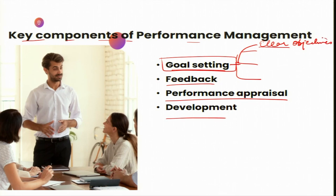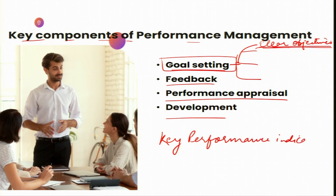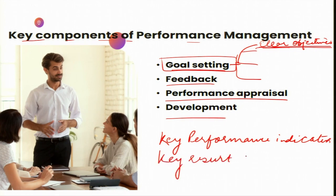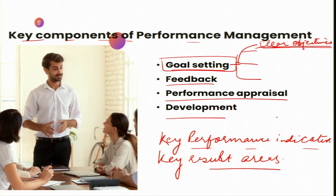One of the important components of goal setting is setting clear objectives. Individuals must be aware of what the key performance indicators are for them. They need to know what is expected out of them and they need to be aware of key result areas. If they are aware of key result areas and key performance indicators right from the beginning, they can work towards satisfying those objectives, ensuring every employee contributes towards the larger mission of the organization.